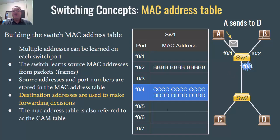Switch1 knows that host D is on port 4. Now, is host D really directly on port 4? No, but the switch learned that host D is associated with this port because traffic crossed the port and it recorded its MAC address — this is how you get to host D. So the switch can forward the packet out of port 4.